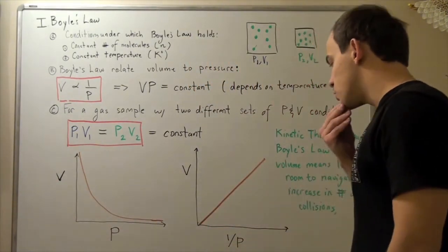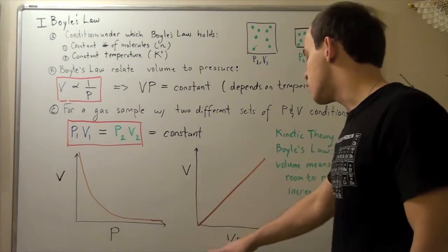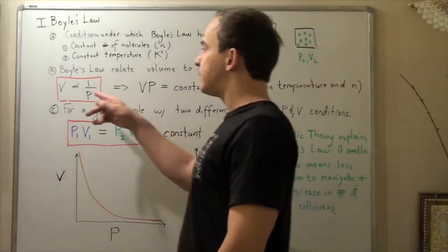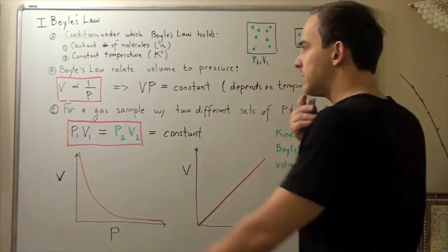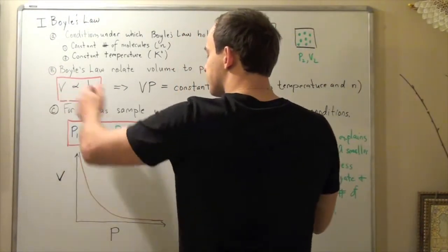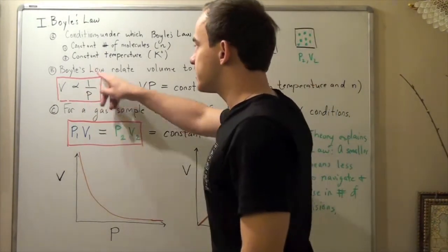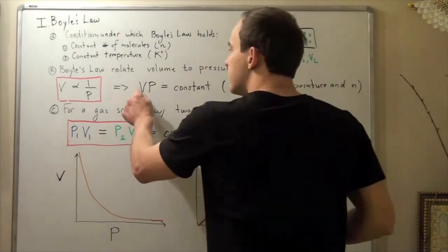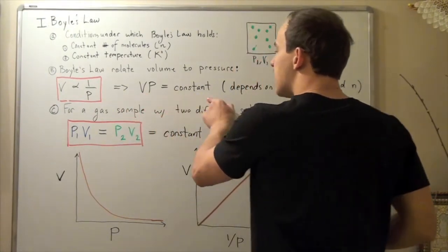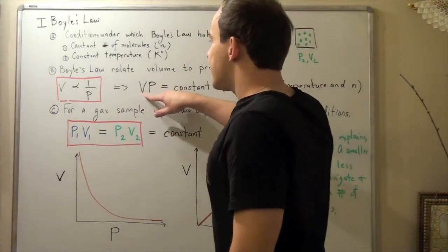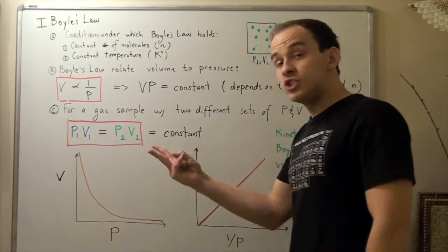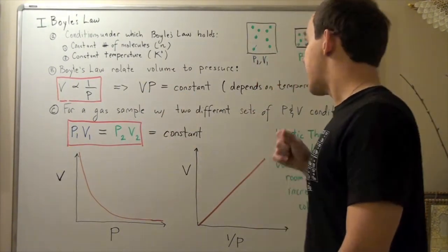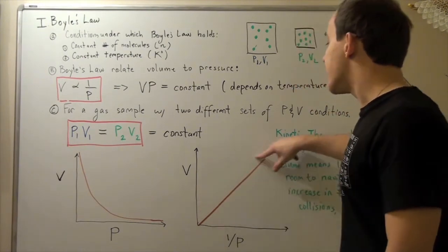Now instead suppose that I graph volume over one over P. Well how would that look? Well, if I graph the volume over one over P, whenever this guy increases, this guy increases by the same ratio amount. And that's because volume times pressure gives you a constant. If this increases by say two times, then this must decrease by two times. That's why this guy is a straight line.